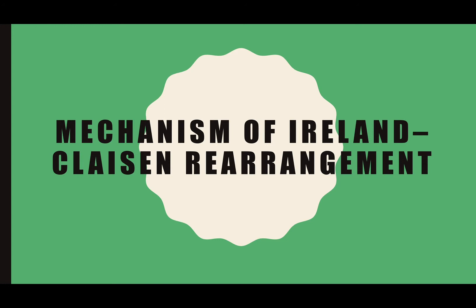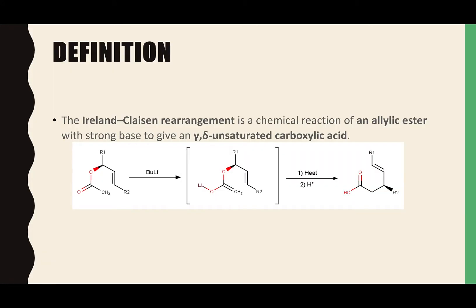Now let's go into the mechanism of the Ireland-Claisen rearrangement. The Ireland-Claisen rearrangement is a reaction of an allylic ester with a strong base to give a gamma-delta-unsaturated carboxylic acid. The tert-butyllithium deprotonates, which is then attacked by oxygen. Then double bond transfer leads to a 3,3-sigmatropic rearrangement. Finally, the oxygen attacks a proton to form a hydroxyl group.